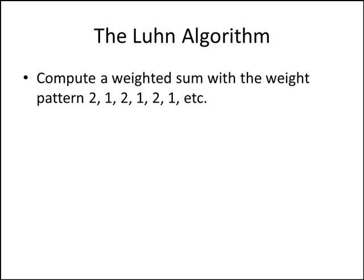So when we see a weight pattern that says 2, 1, 2, 1 like that, that means we're going to take the first digit of our credit card number and multiply it by 2 and record the product. Take the second digit and multiply it by 1, the third digit multiply it by 2 again, the fourth digit multiply it by 1, and so on. So we'll keep alternating multiplying by 2 and multiplying by 1 until we get to the end of our credit card number.